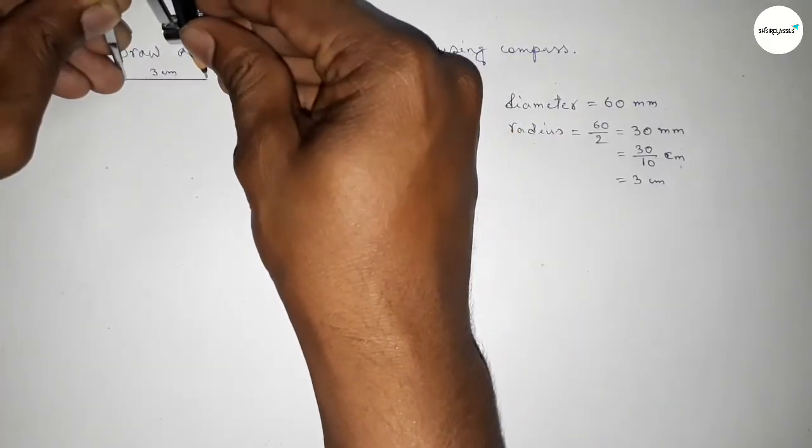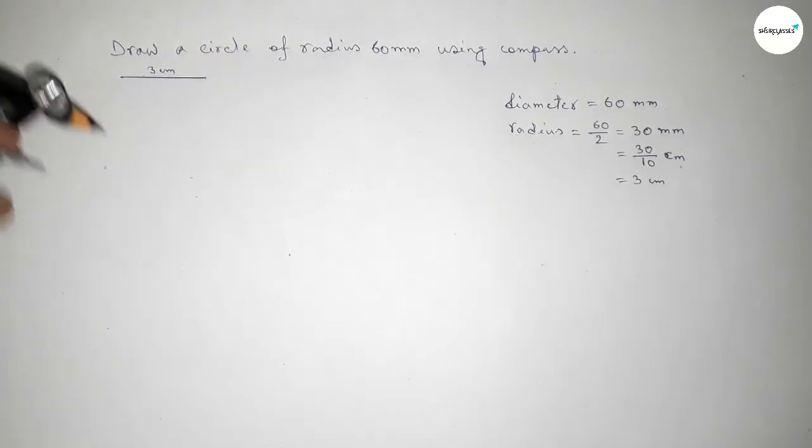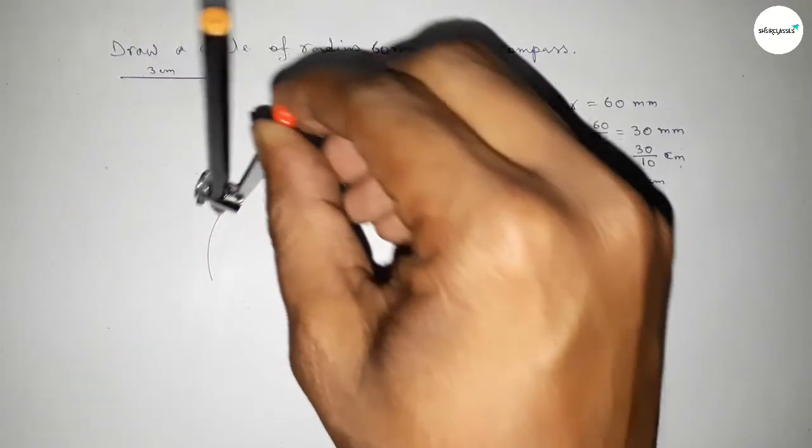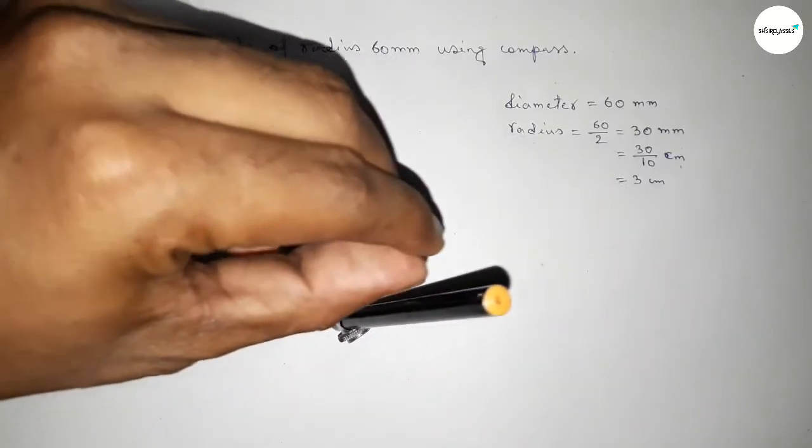So now taking the length 3 centimeters and putting the compass on the point. Now drawing here an arc by this way and it represents a circle.